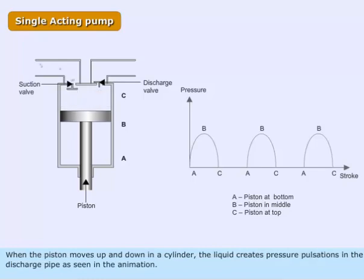When the piston moves up and down in a cylinder, the liquid creates pressure pulsations in the discharge pipe as seen in the animation.